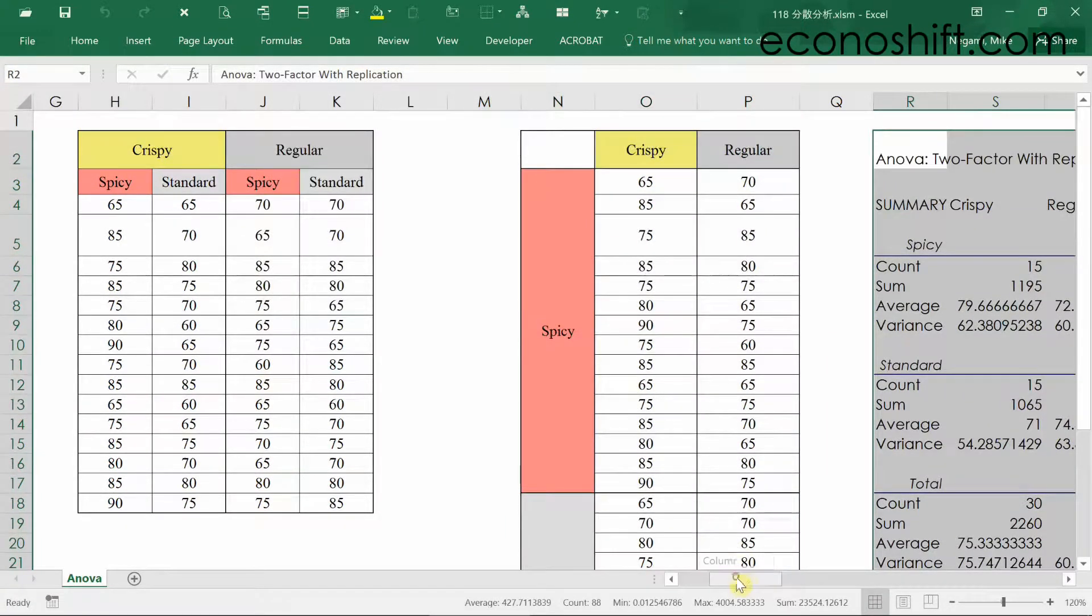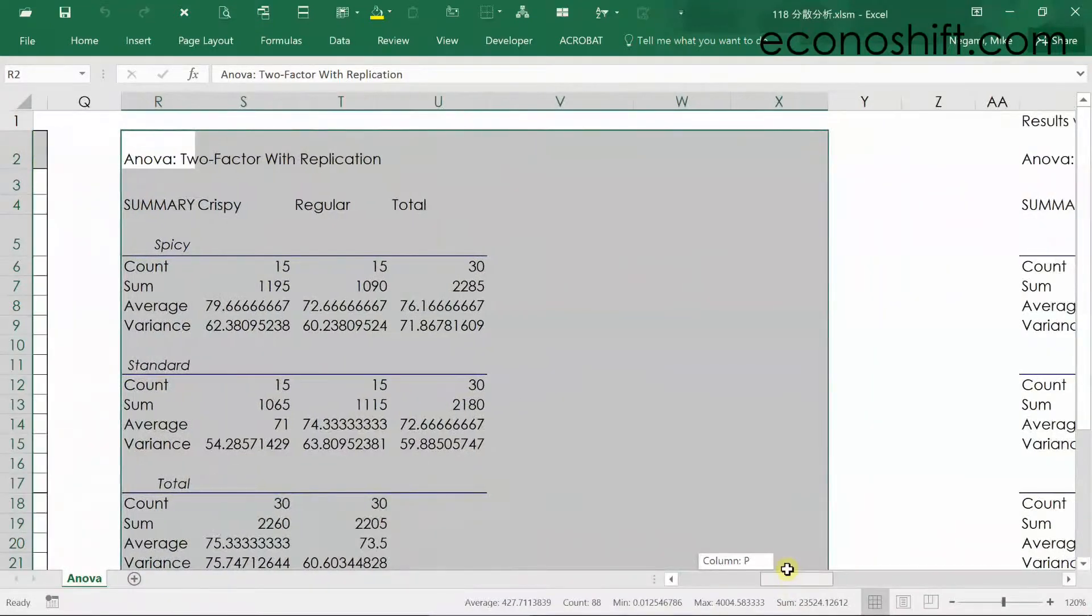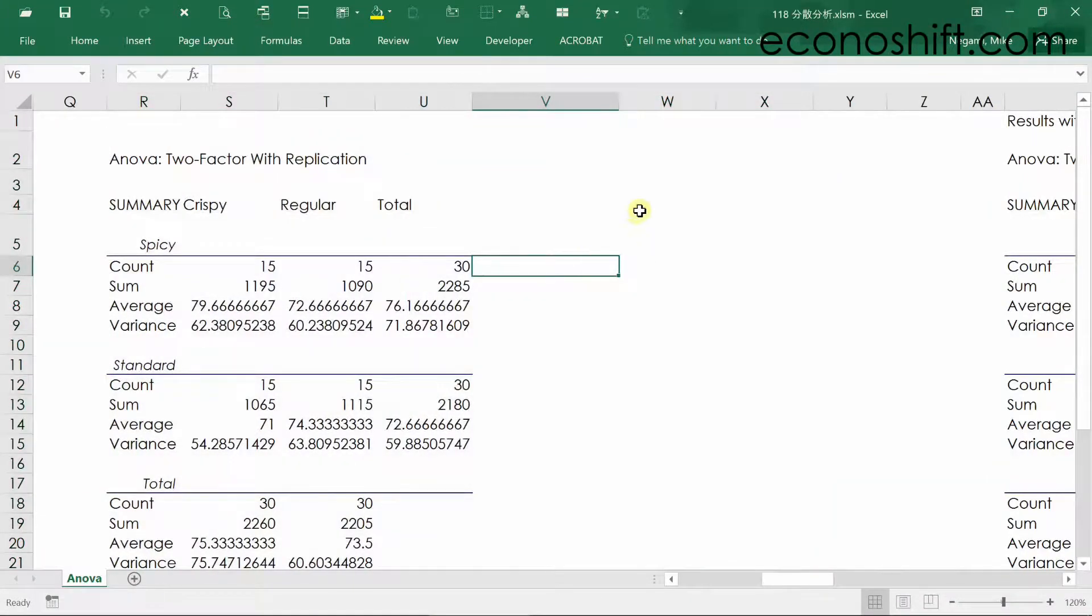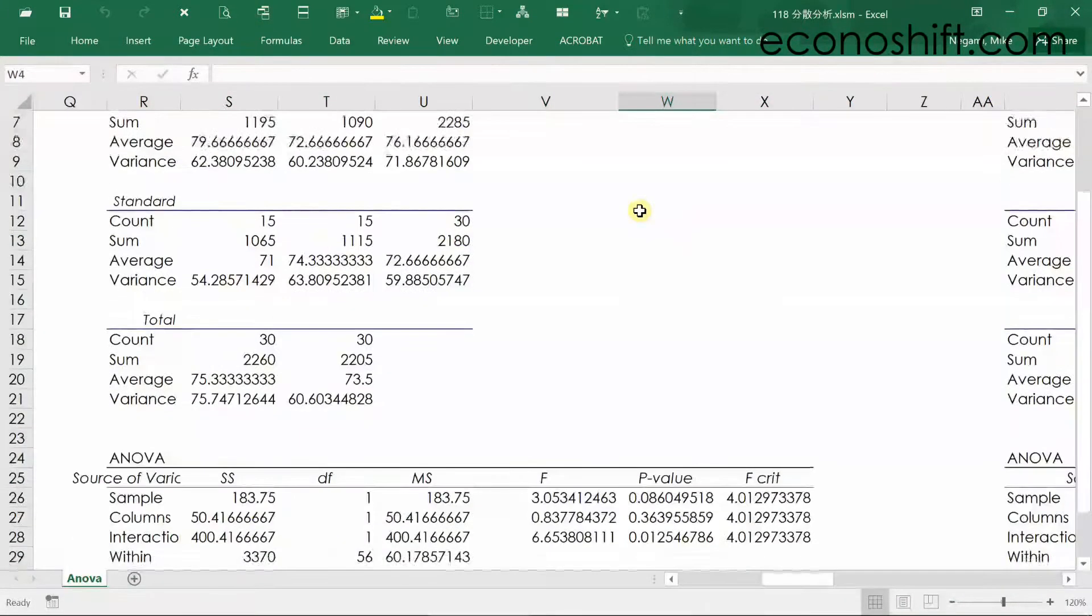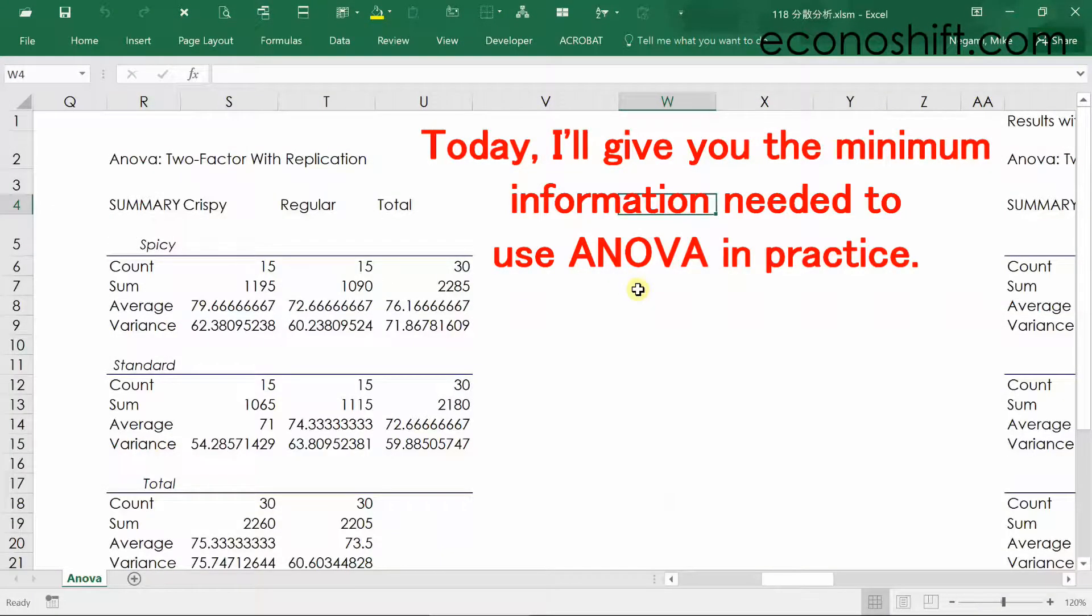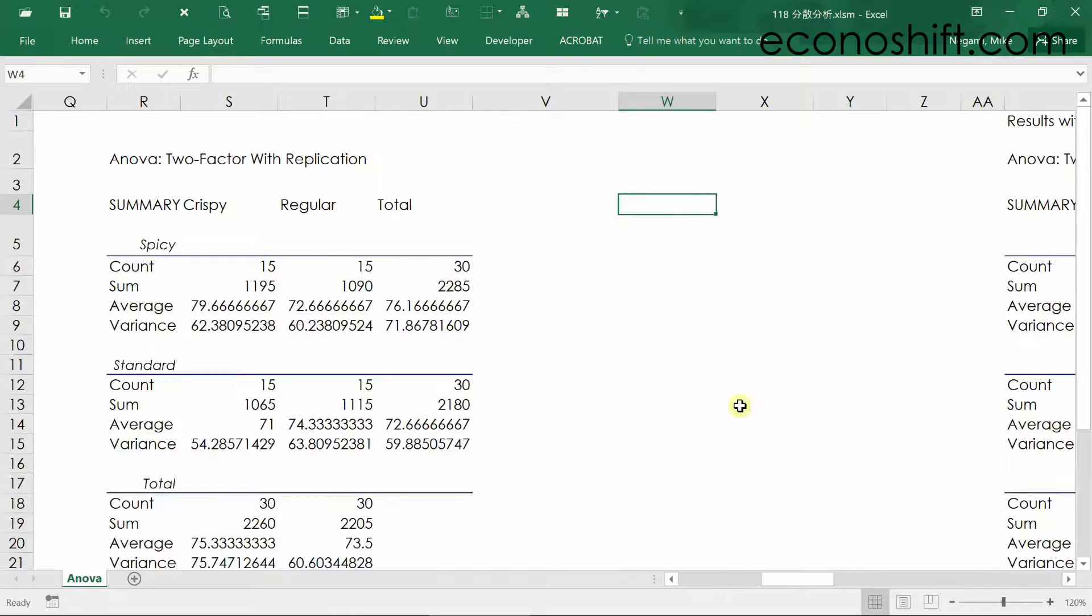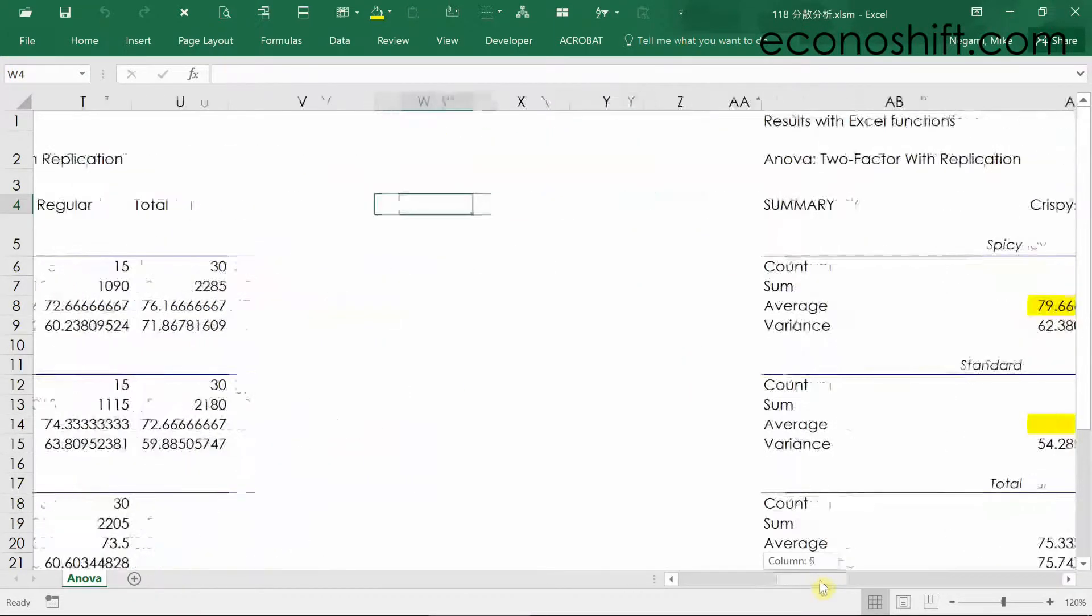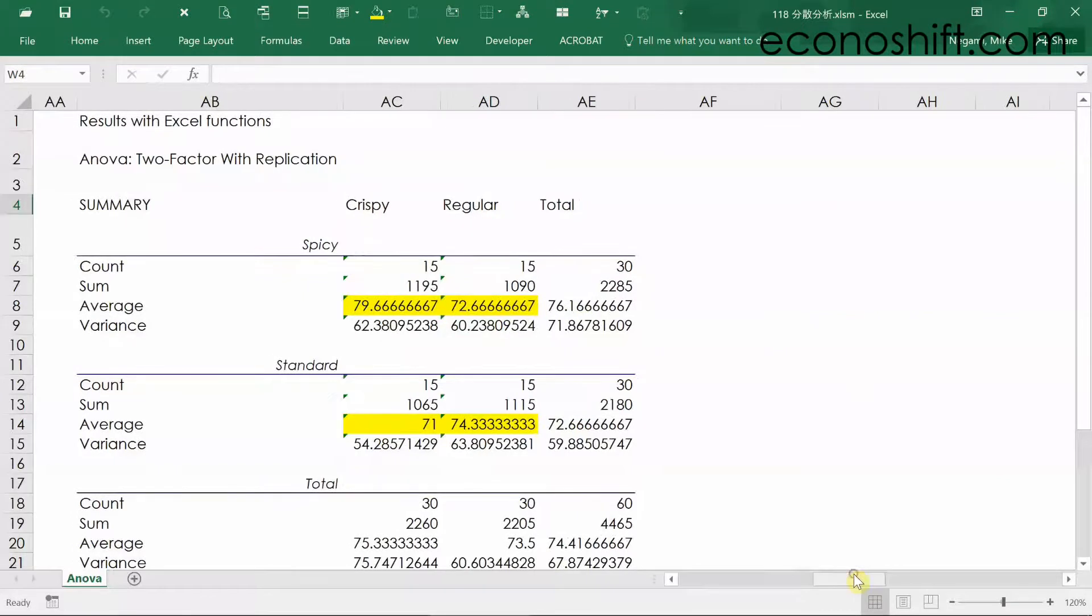A lot of numbers came out. Of course, it's better to understand the meaning of all the numbers, but today I'll give you minimum information needed to use ANOVA in practice. I added the same table to the right. The yellow highlighted parts are the most important.